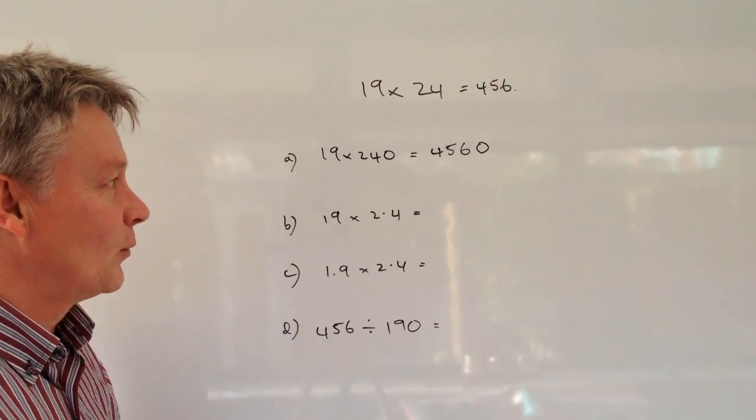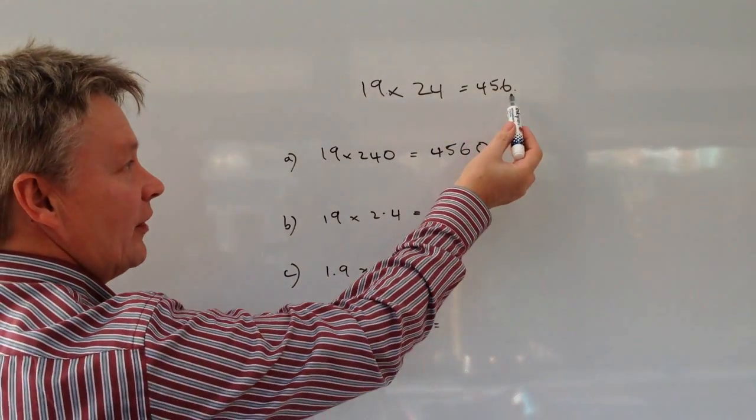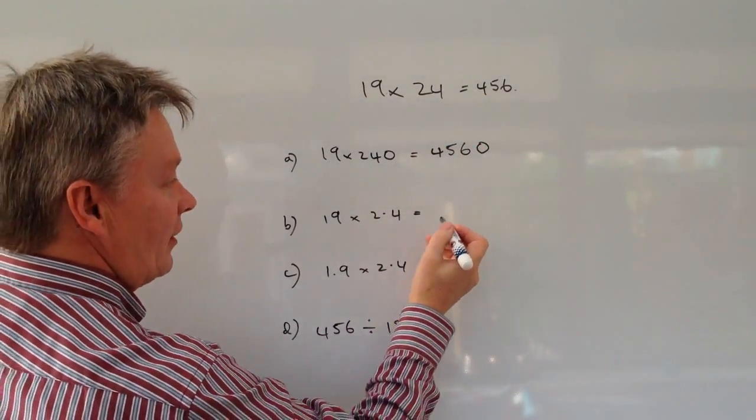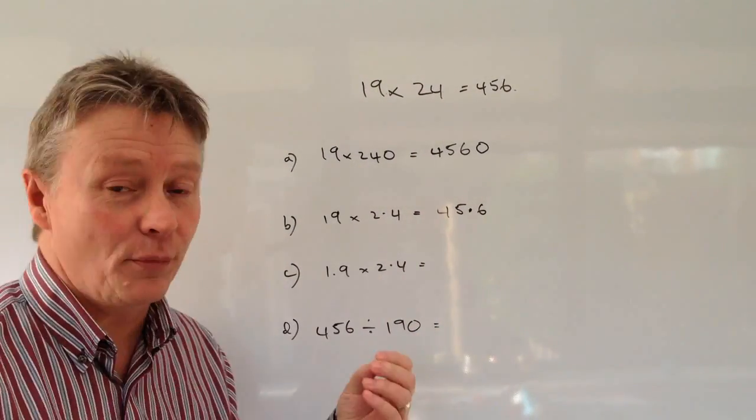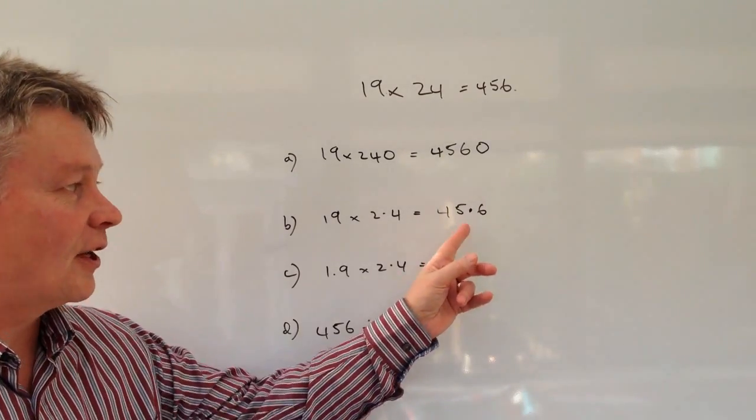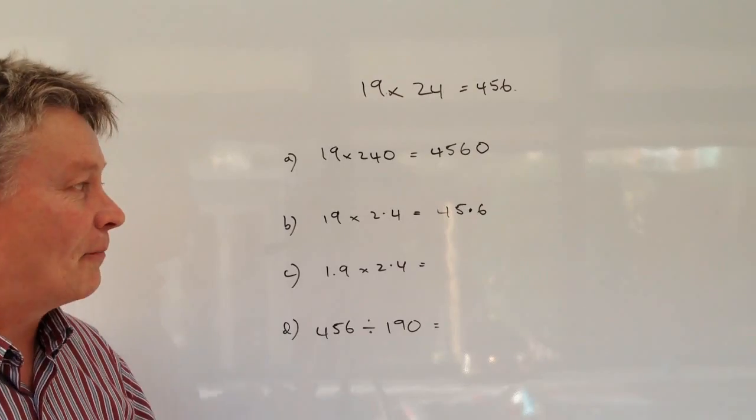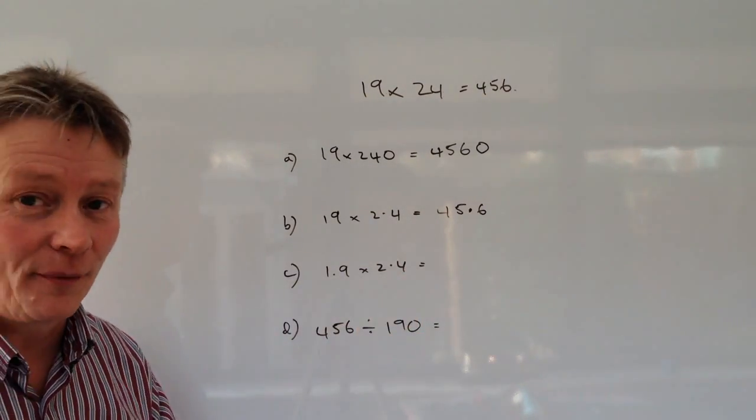The second one: the decimal point again has moved one place towards me, so I'm going to move the answer one place, and that becomes 45.6. Now just as a point here, when you're doing these questions you need to make sure that you very clearly show the decimal point. It's quite easy to miss sometimes, so just be very careful about these.